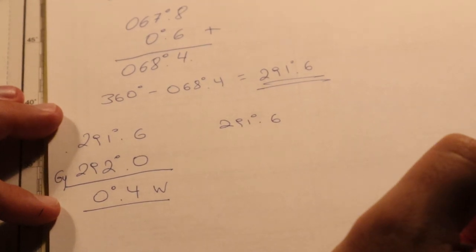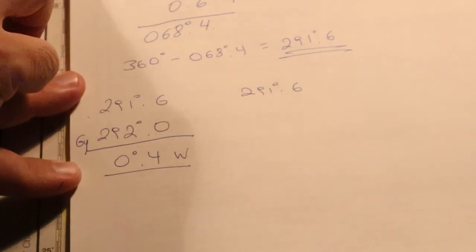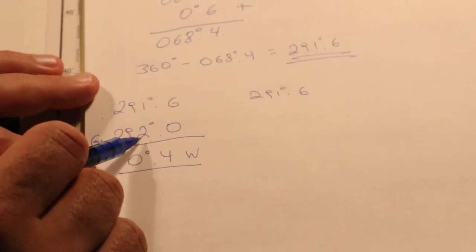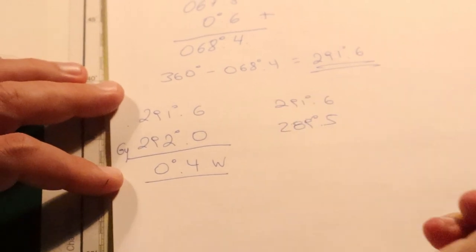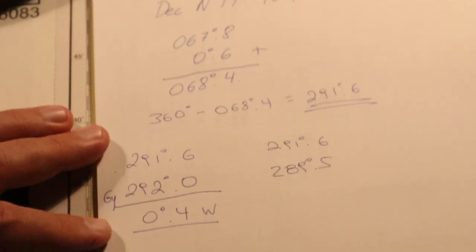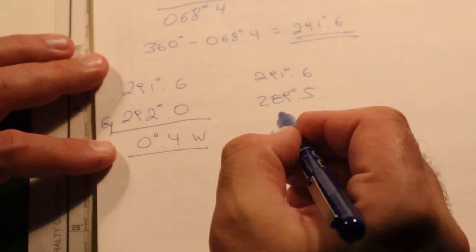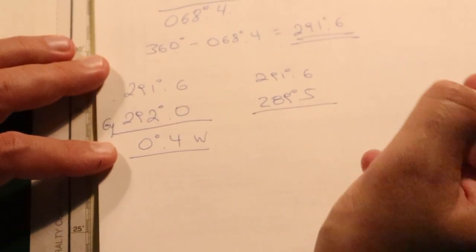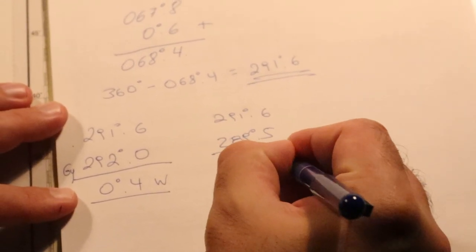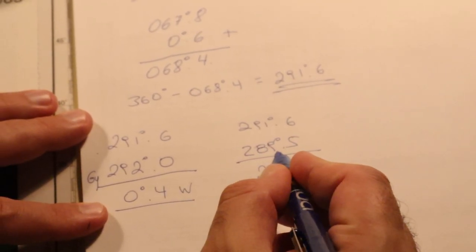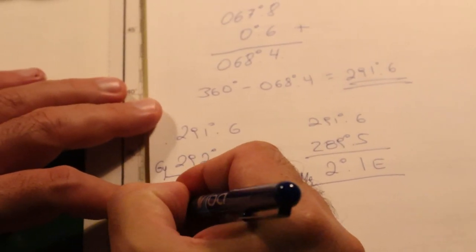Now we check our magnetic. Our magnetic has a 2.5 degrees difference. So 292 degrees minus 2.5 gives 289.5 degrees. This means that if we went to the magnetic compass and observed the sun at the same time, the observation from the magnetic compass would have been 289.5 degrees. The correction here is 2.1 degrees east — compass least, error east. So we also have the magnetic error alongside the gyro error.